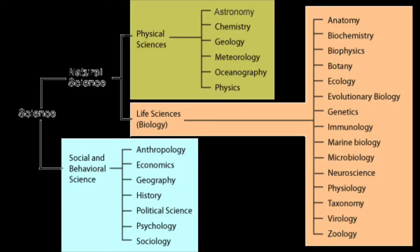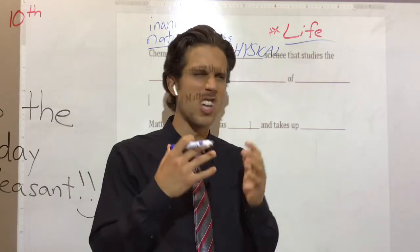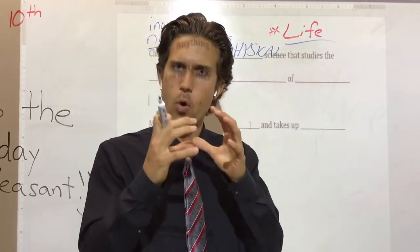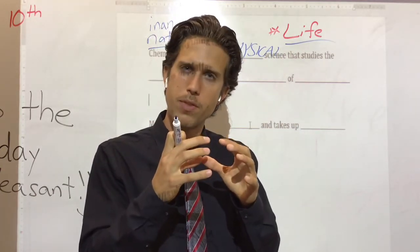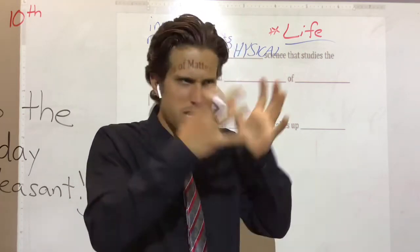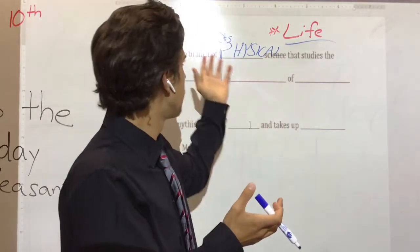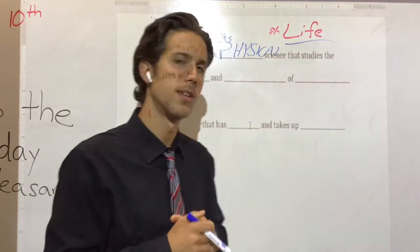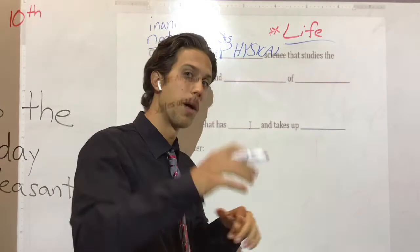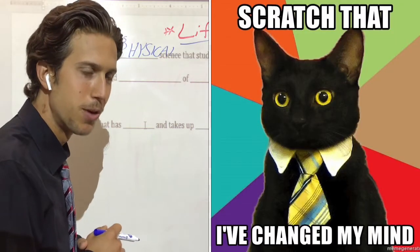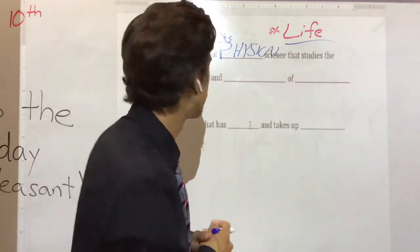An example of a life science would be biology — bio means life, so biology is the study of life, living things. Chemistry is a physical science. How about geology? Geology is the study of rocks, the study of the earth. The earth isn't living, but it is made of natural objects, so geology is a physical science.